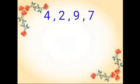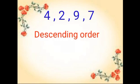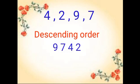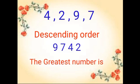Next, to form the greatest number, we arrange the digits in descending order: 9, 7, 4, 2. So the greatest number is 9,742.